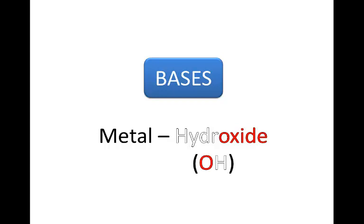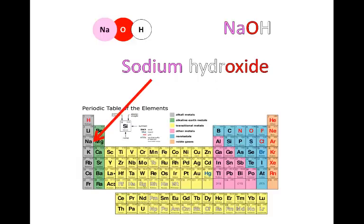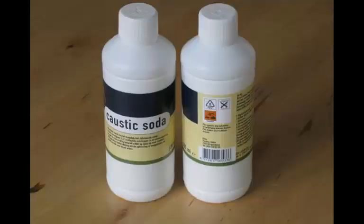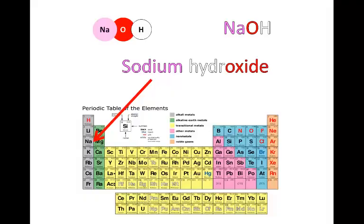Let's take some examples. Sodium hydroxide, which I told you about just now — drain cleaner. Very dangerous stuff. Also called caustic soda. Caustic means corrosive — it eats things up because it's so reactive.